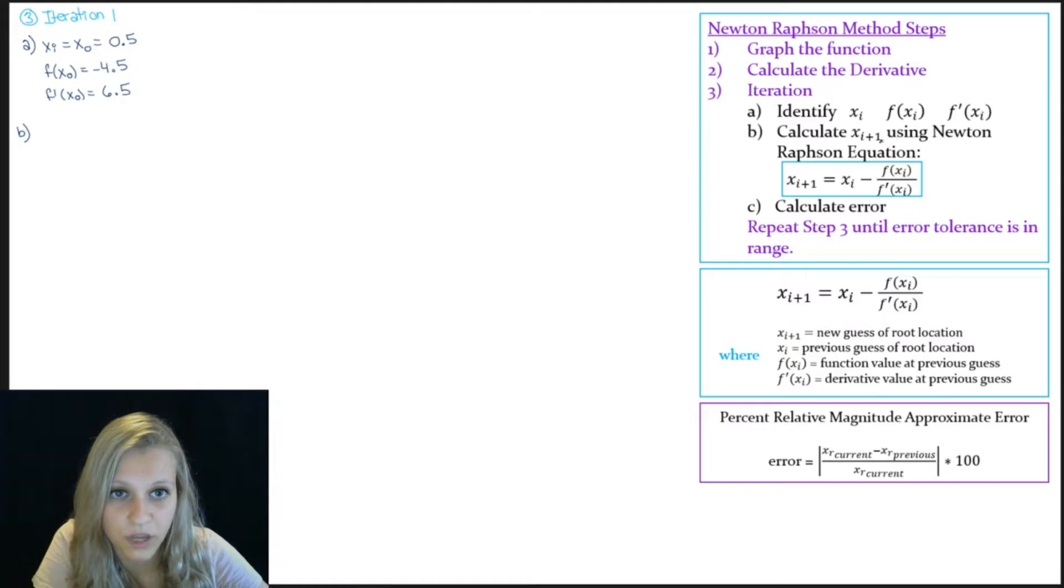Next I need to calculate x of i plus 1 using the Newton-Raphson equation. And I've expanded on that down here in blue. So x of i plus 1 is just notation for the new guess of our root location. And then x of i is notation for our previous guess. And then of course we have the function value at our previous guess and the derivative value at our previous guess. So we already have the pieces to our equation here. So we're just going to substitute them in. So x of i plus 1 is going to be 0.5 minus the quantity of negative 4.5 divided by 6.5. And I get that that is 1.19231. That is going to be labeled as x1.